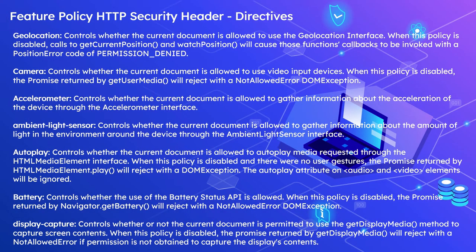Let us now see the list of feature directives available with the Feature Policy header. The first one is geolocation, which controls whether the current document is allowed to use the geolocation API. The next one is camera, which controls whether the current document is allowed to use video input devices. When this policy is disabled, if somebody calls getUserMedia, it will be rejected with a NotAllowedError DOMException.